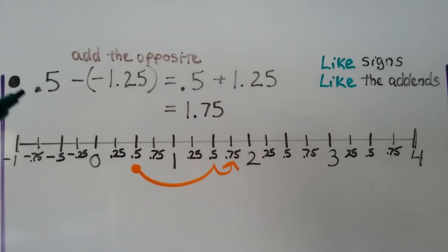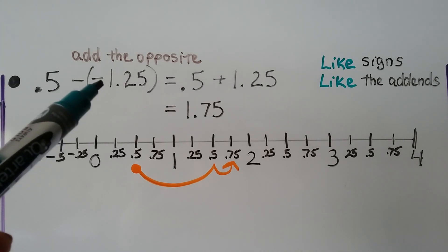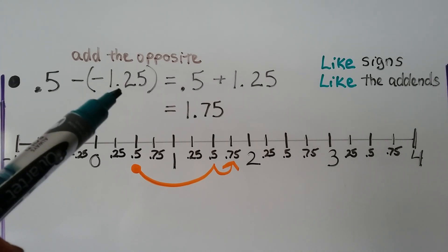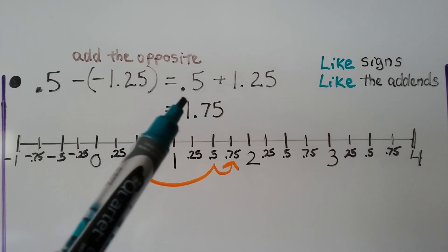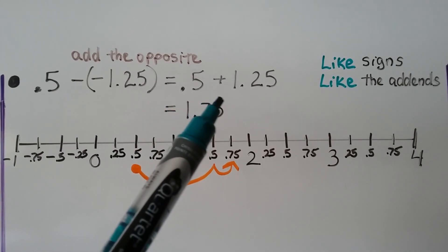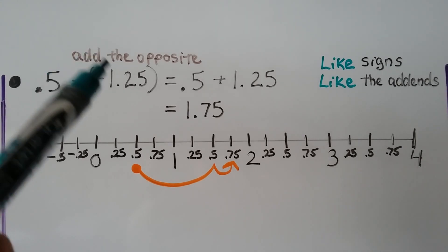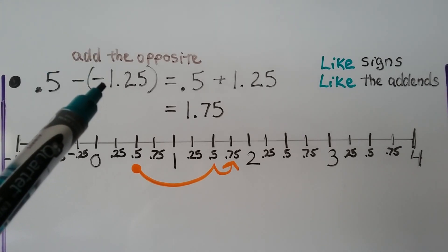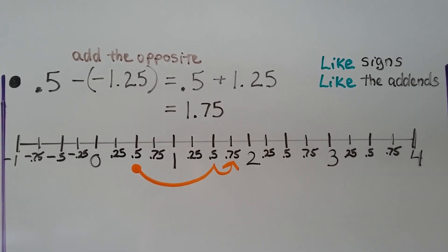Here we have 0.5 — 5 tenths — minus a negative 1.25. It's going to equal 0.5 plus 1.25. This turns into an addition sign, and the opposite of negative 1.25 is positive 1.25. We add them together and we get 1.75.